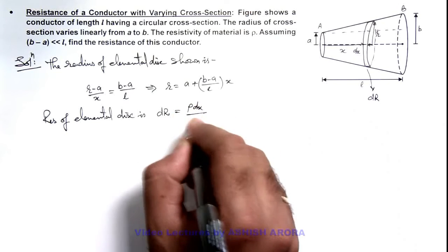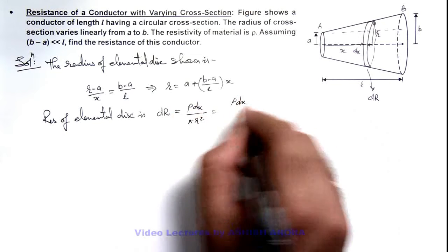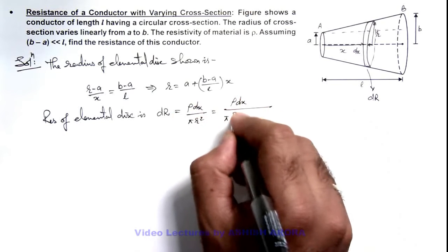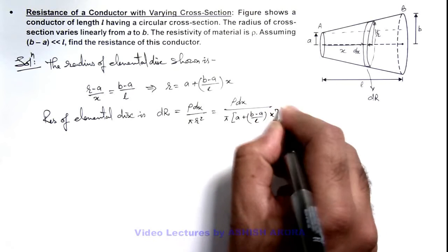dx by area is πr², so this will be ρ dx divided by π times [a + (b-a)x/l]².